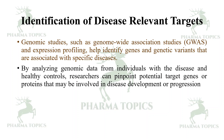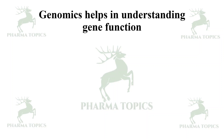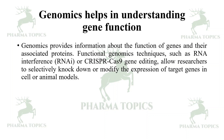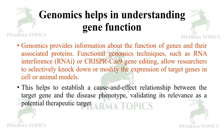Genomics helps in understanding gene function by providing information about the function of genes and associated proteins. Functional genomics techniques such as RNA interference or CRISPR-Cas9 gene editing allow researchers to selectively knock down or modify the expression of target genes in cell or animal models. This helps establish a cause-and-effect relationship between the target gene and the disease phenotype, validating its relevance as a potential therapeutic target.